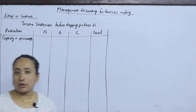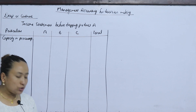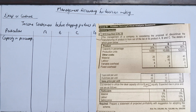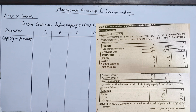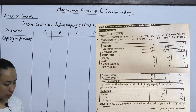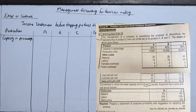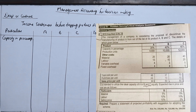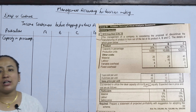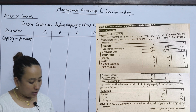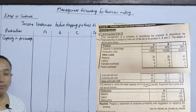We have a special offer. We have a question about drop or continue. The management of a company is considering the proposal to discontinue the manufacturing of product A — out of the list of its products A, B, and C. We have a discontinue of product A, the details of which are given below.